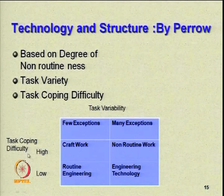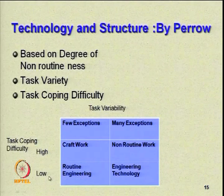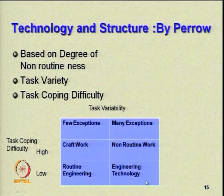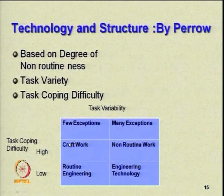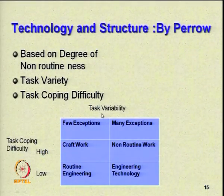Similarly, low task coping difficulty and few exceptions gives you routine engineering. This matrix gives you four choices between task coping difficulty and task variability.